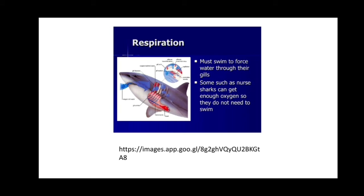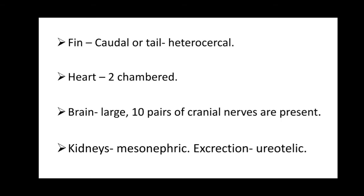Respiration is with the help of five to seven pairs of gill slits. They must swim to force water through their gills to get enough oxygen. The fin is of caudal type and the tail is of heterocercal type. The heart is two-chambered — one auricle for receiving blood and one ventricle for pumping blood. The brain is large and 10 pairs of cranial nerves are present.